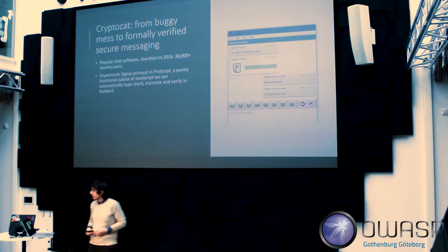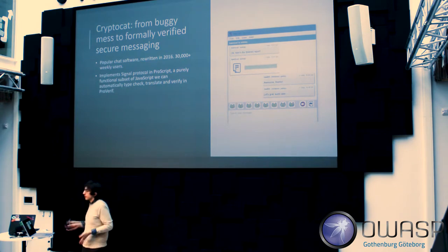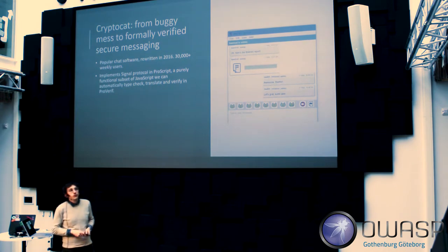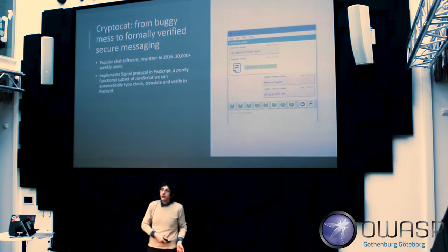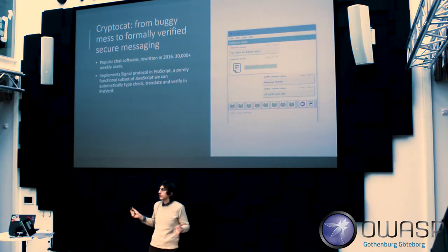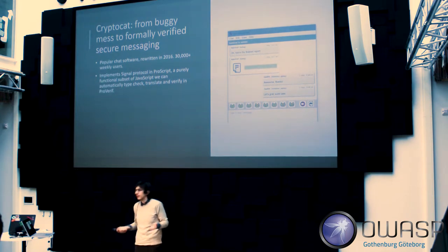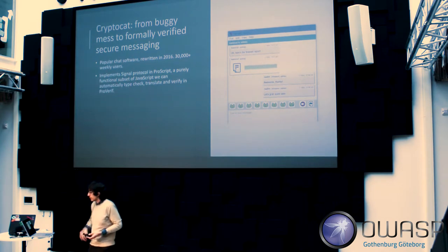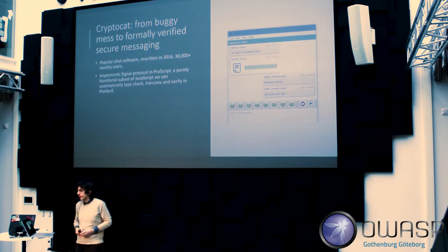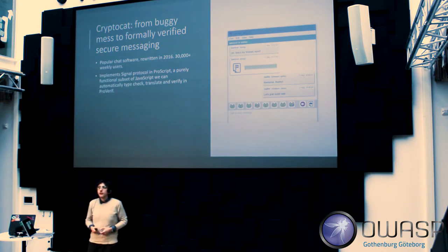Let's take a look at how CryptoCat benefited from formal verification. It was a buggy mess. For example, we were supposed to generate Curve25519 private keys, but by mistake we were generating only 56-bit private keys because we were unable to correctly handle big integers in JavaScript. That was a significant mistake.